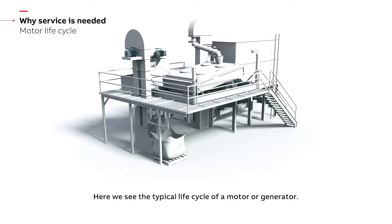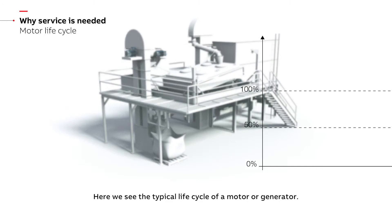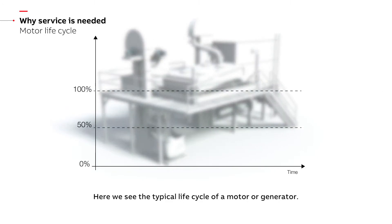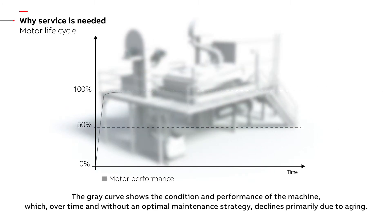Here we see the typical life cycle of a motor or generator. The grey curve shows the condition and performance of the machine, which over time and without an optimal maintenance strategy declines primarily due to aging.